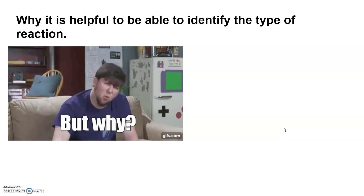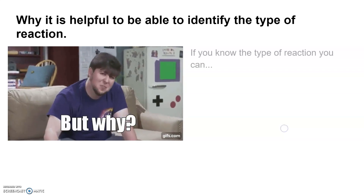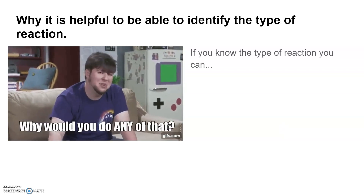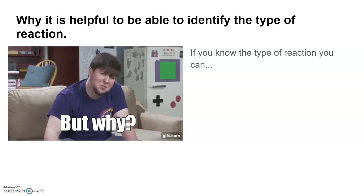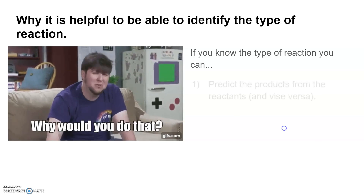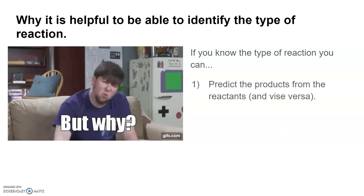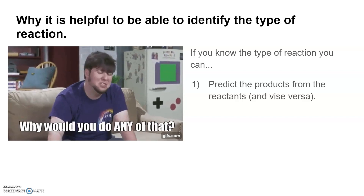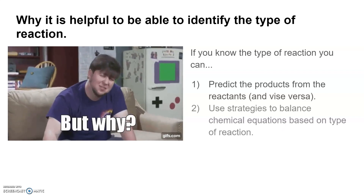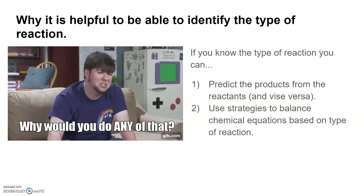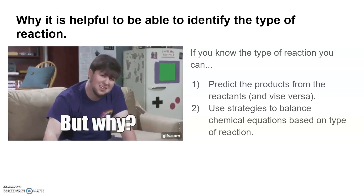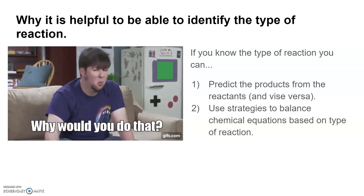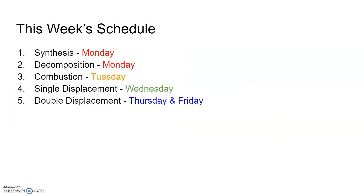Just a quick reminder of why we're learning this. As we mentioned in Day 6, if you know the type of reaction that you have, there's a couple things you can do. One, you can predict the products from the reactants, and vice versa. And then finally, you can use certain strategies to balance chemical equations based on the type of reaction. So this week we're learning about the five different types of chemical reactions.